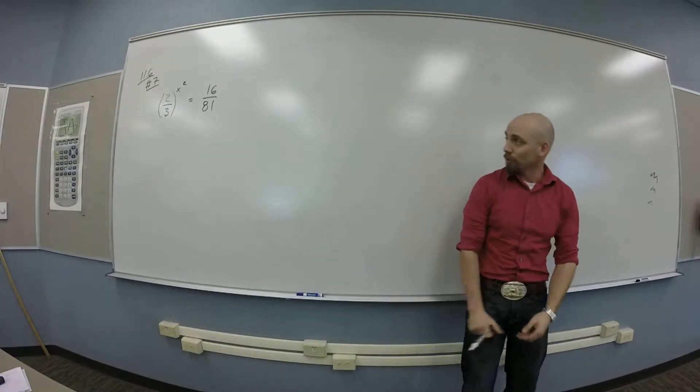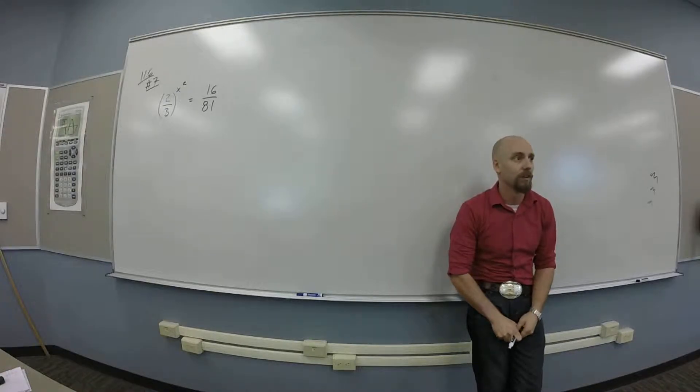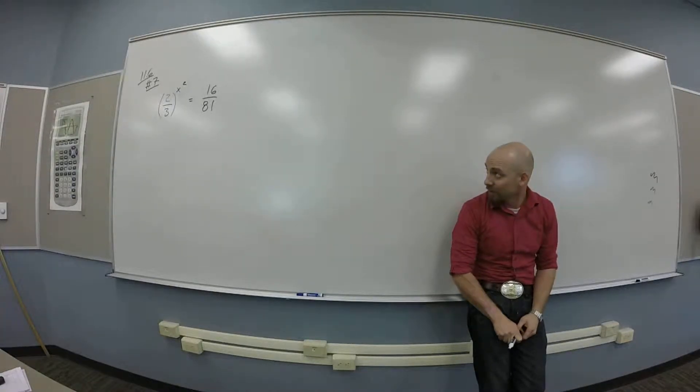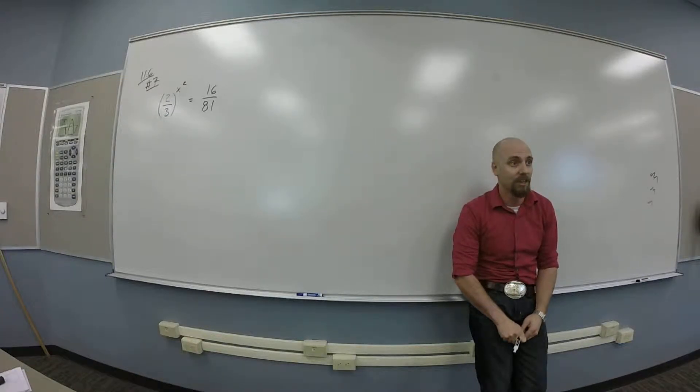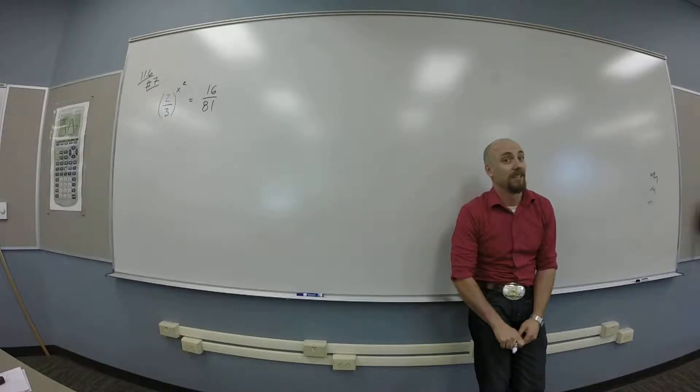Okay, so we want to try 11.6 number 7, which says presumably solve this thing, which is 2 thirds to the x squared is 16 over 81. Okay, how do I start this? This is scary, yeah?